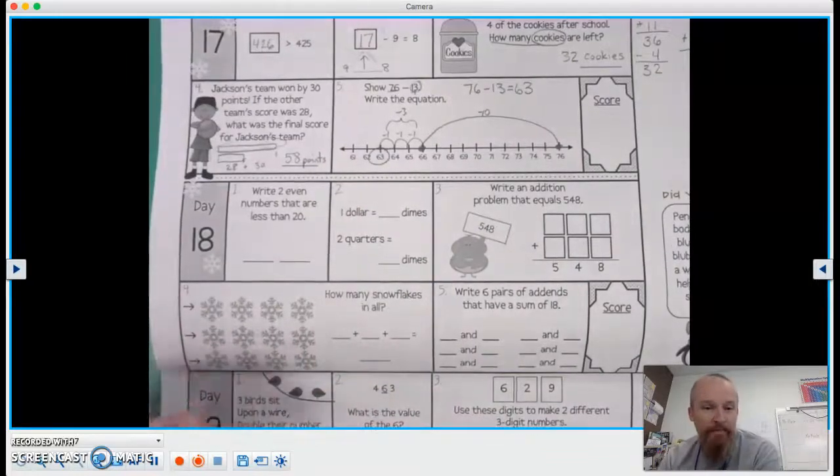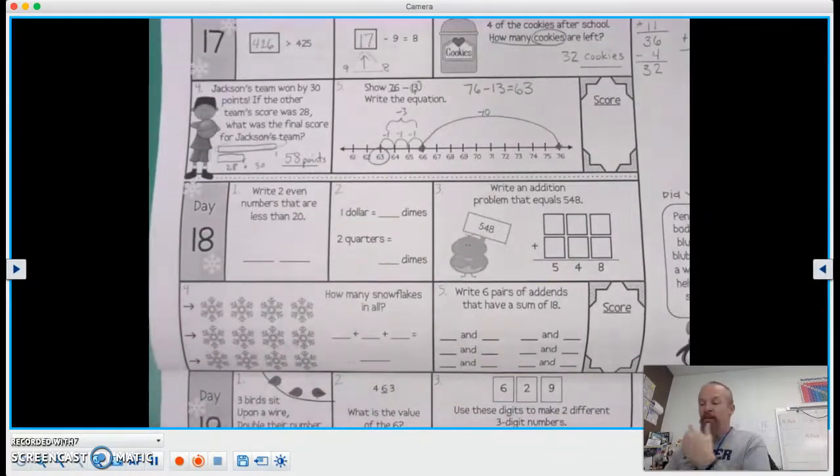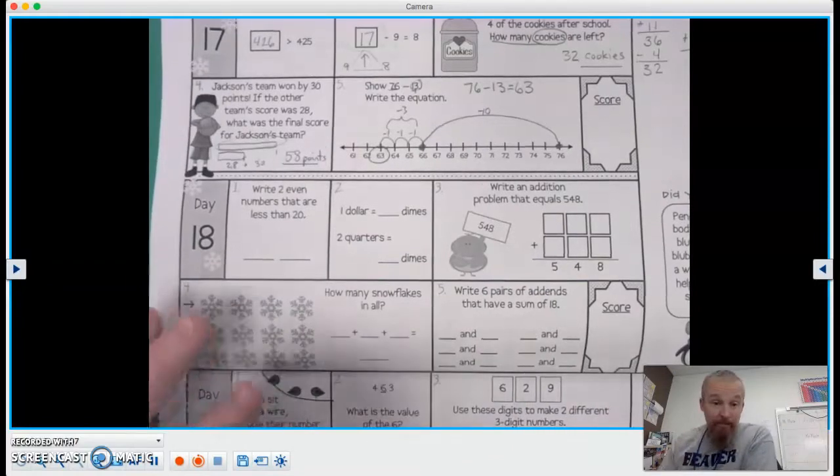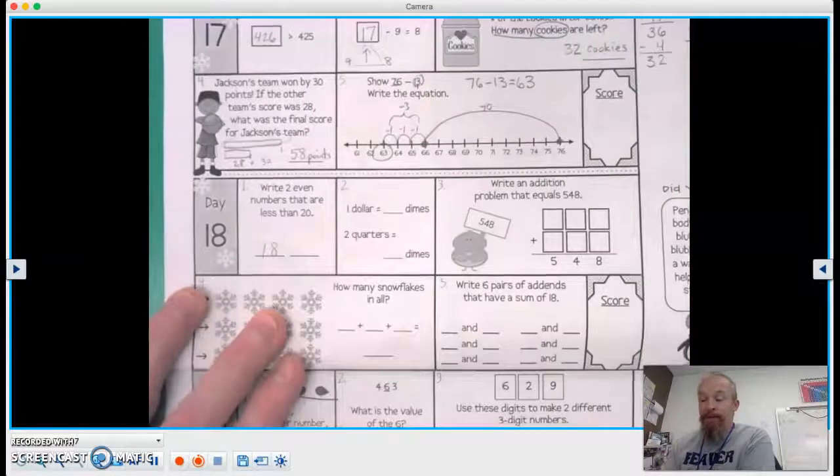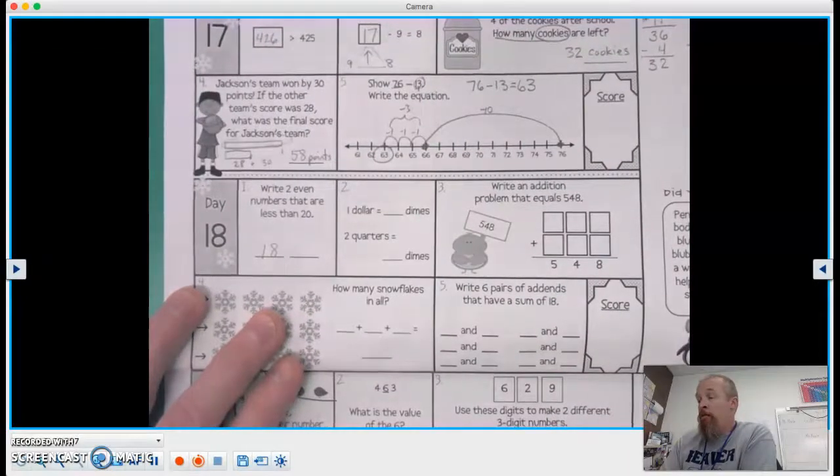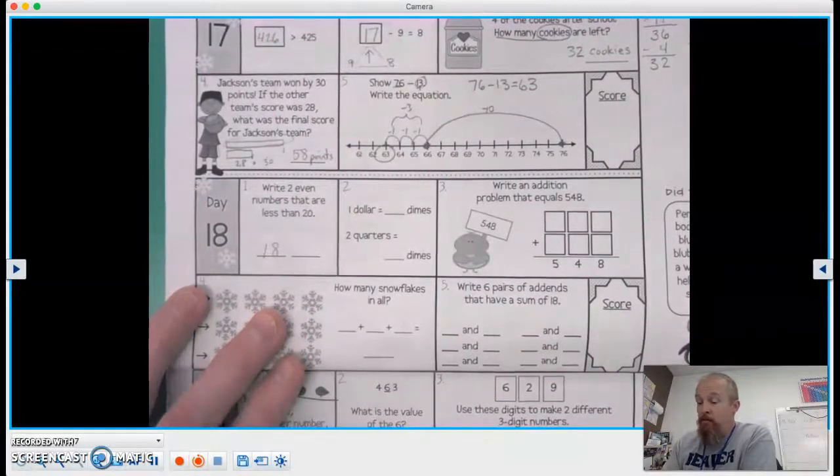Write two even numbers that are less than 20. Well, let's do 18. That is the first even number that is less than 20. And we could go 6 or 10.